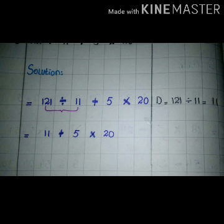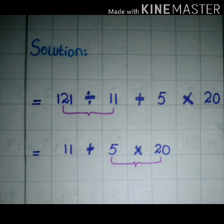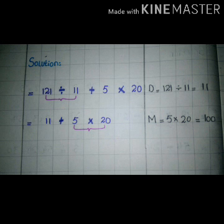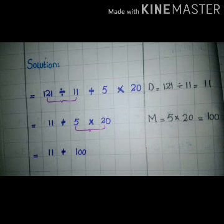Now according to the DMAS rule, the second step is multiply. So we multiply the numbers: 5 multiply by 20 is equal to 100. We write this step and in the second step we write the remaining values as they are, like this: is equal to 11 plus 100. So 11 is the remaining value from the second step and the multiplication of 5 by 20 gives 100.